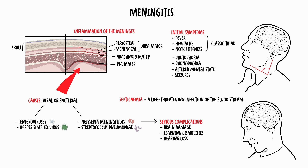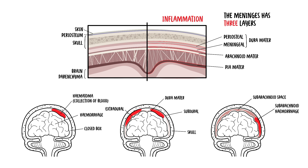Viral meningitis also typically occurs with confusion. In summary, this video discussed the meninges — the distinct membranous coverings of the brain and spinal cord. We covered the three layers: the dura mater, the arachnoid mater, and the pia mater, as well as their functions. We then discussed the clinical cases of an extradural (also known as epidural) hematoma, a subdural hematoma, a subarachnoid hemorrhage, and meningitis, and how each case would present clinically.